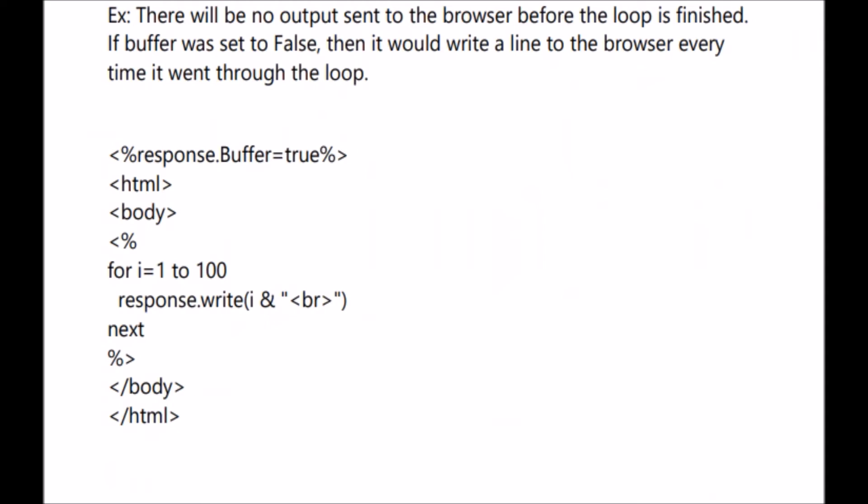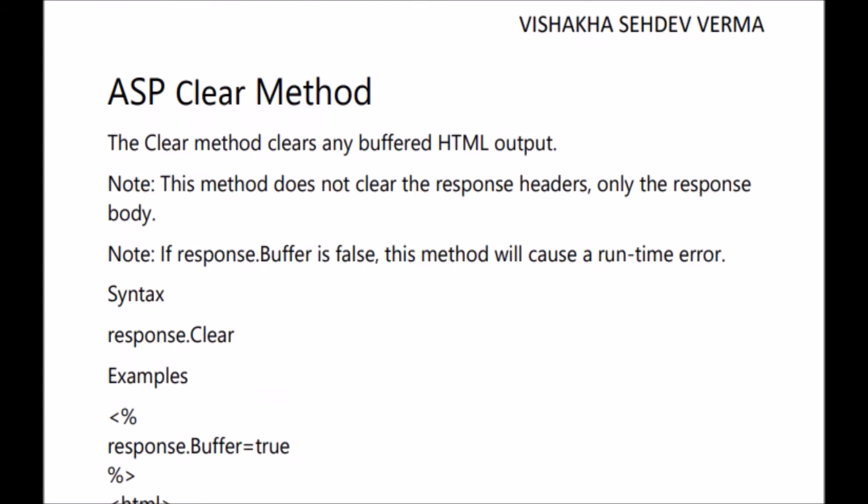Here is an example: we set response.buffer to true, and this is placed before the HTML tag. After setting this property to true, HTML tag is opened, body tag is opened, and we run a for-next loop. In this loop, for I equal to 1 to 100, response.write I and a line break tag, then next, close HTML tag. Since response.buffer is true, there will be no output sent to the browser before the loop is finished. If the property were set to false, it would write a line to the browser every time it passes through the loop — 100 times.